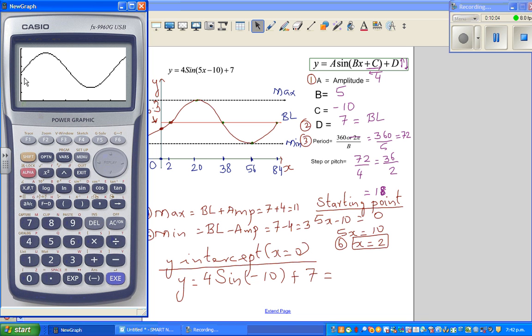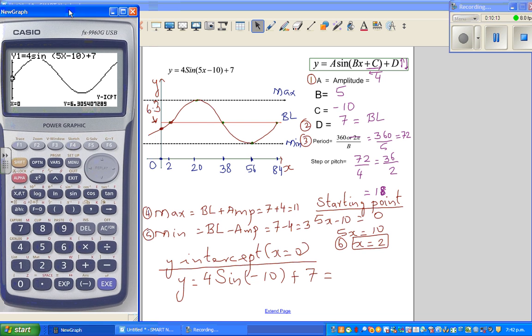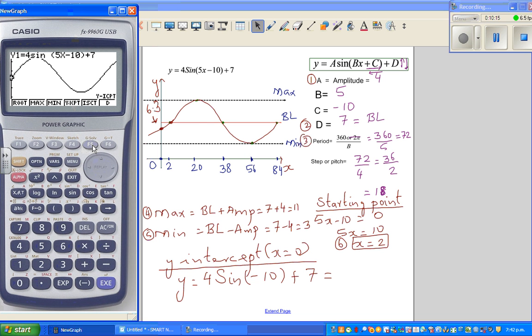Can you see? So we'll check the y-intercept. So g-sol, y-intercept. So when x is 0, y is 6.3. That's what we saw. That's what we got.